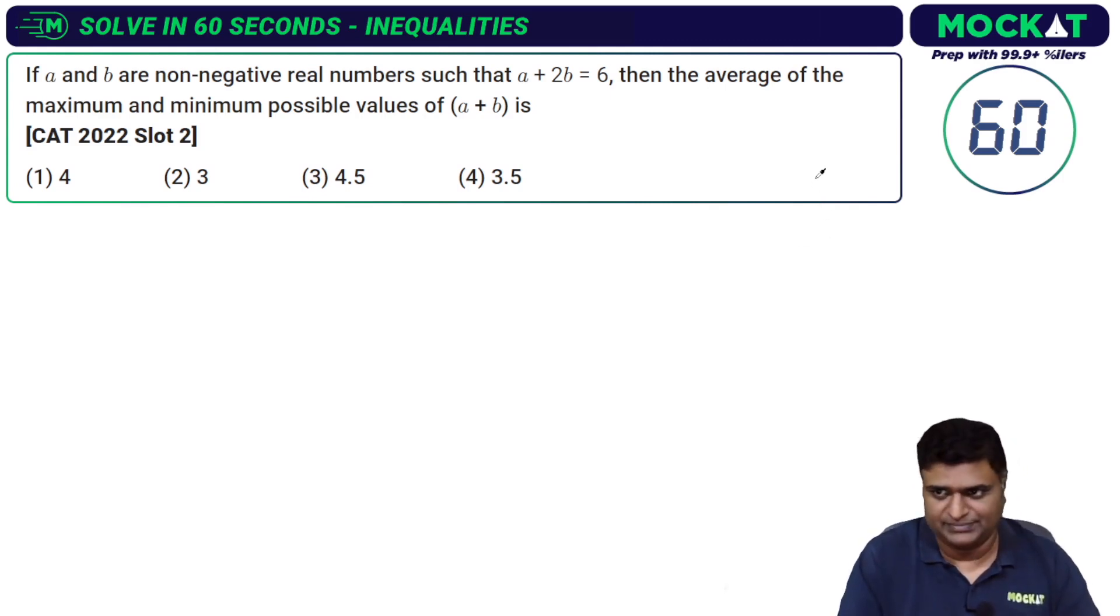Let's see how you should solve this ideally. 60 seconds to go. If a and b are non-negative real numbers such that a plus 2b equals 6, then the average of the maximum and minimum possible values of a plus b is what?